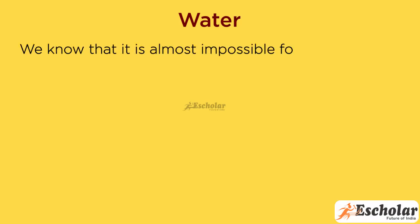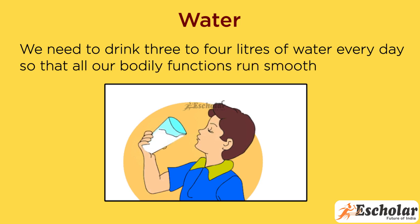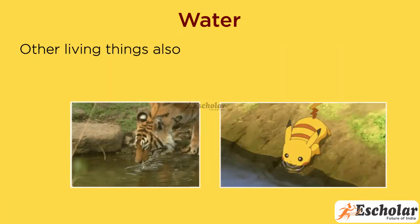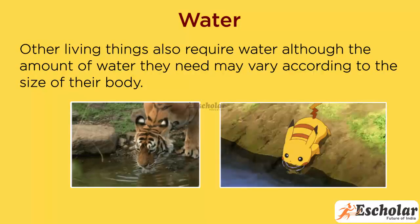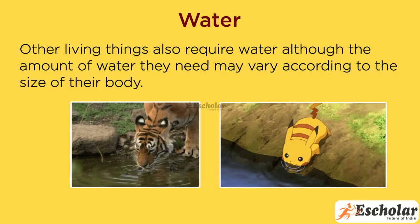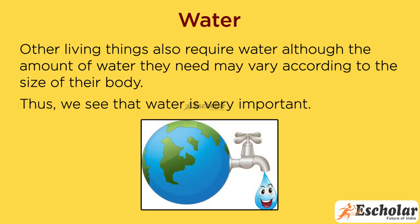Water. We know that it is almost impossible for us to spend even a single day without water. We need to drink 3 to 4 liters of water every day so that all our bodily functions run smoothly. Other living things also require water, although the amount of water they need may vary according to the size of their body. Thus, we see that water is very important.